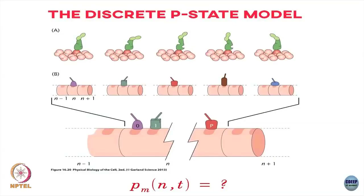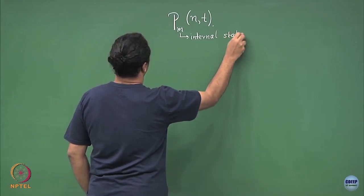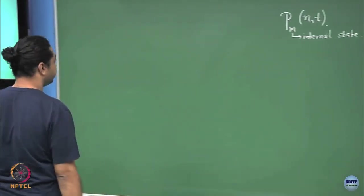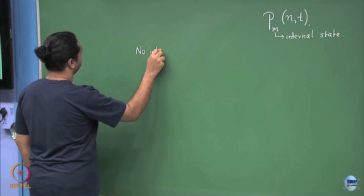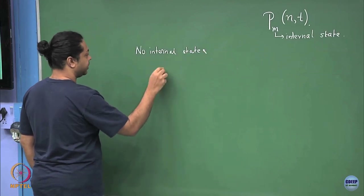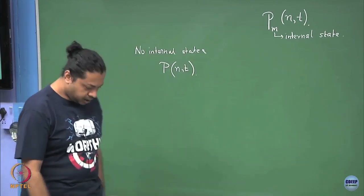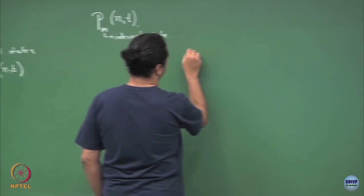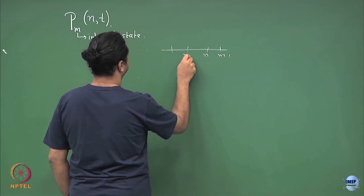In the simplest case, m is the internal state marker. So in the simplest case what we started off with is that there are no internal states. You simply had a probability to find the motor at position n at time t. Given the position of the motor on the lattice, let us say this is n, this is n plus 1, this is n minus 1, and so on.